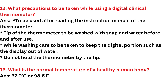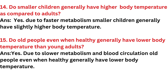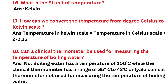Question 12: Precautions for using a digital clinical thermometer — wash the tip with soap and water before and after use; keep the digital display portion out of water; do not hold by the tip. Question 13: Normal body temperature is 37.0°C or 98.6°F. Question 14: Do smaller children generally have higher body temperature than adults? Answer: Yes, due to faster metabolism. Question 15: Do old people generally have lower body temperature? Answer: Yes, due to slower metabolism and blood circulation. Question 16: What is the SI unit of temperature? Answer: Kelvin.